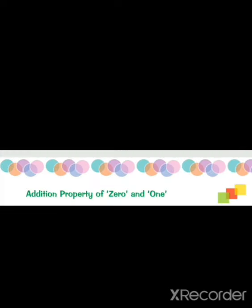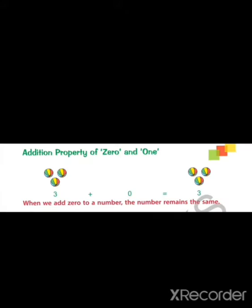Now let us understand the addition property of 0 and 1. When we add 0 to a number the number remains the same. In this picture you can see that we have 3 balls and then we add 0 ball to it. Then we will get number 3.